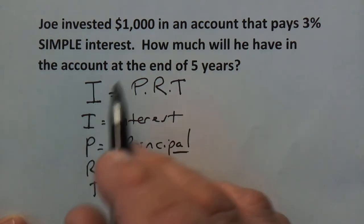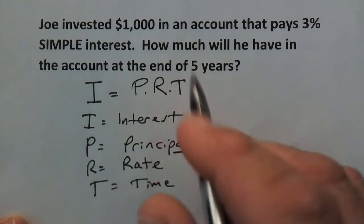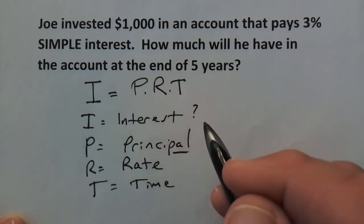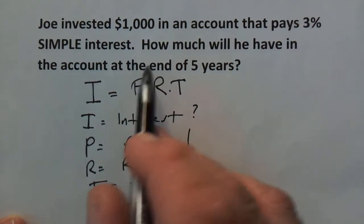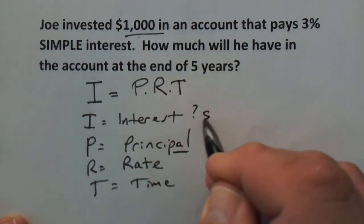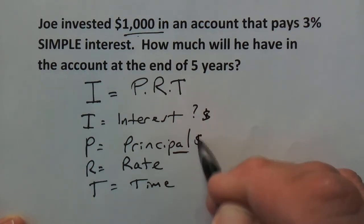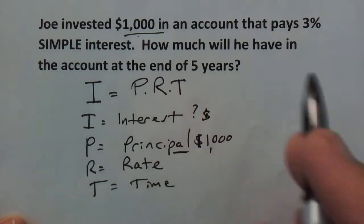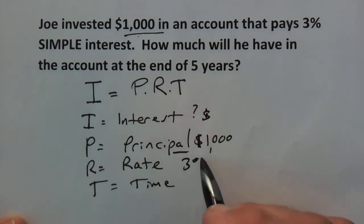The amount of interest, that's what we're trying to figure out. So we don't know that right now. The principal is the $1,000 that Joe put in there. The rate is 3%. However we're going to write it as a decimal so we can work with it which is 0.03. In other words we move the decimal place over two places or we divide it by 100.